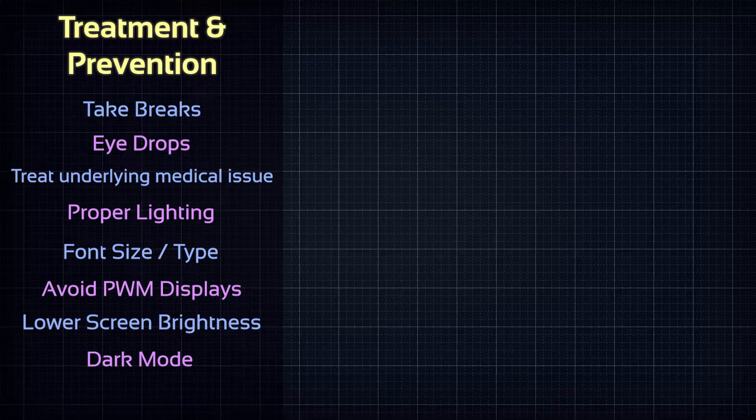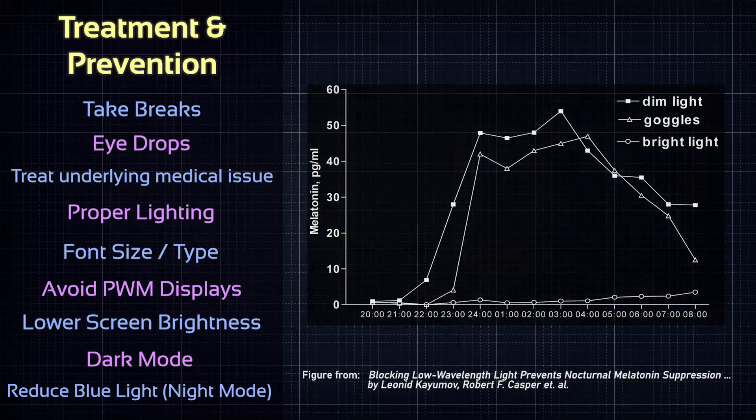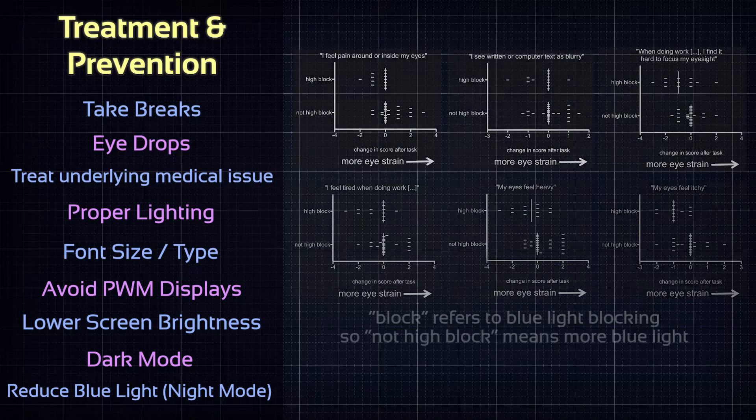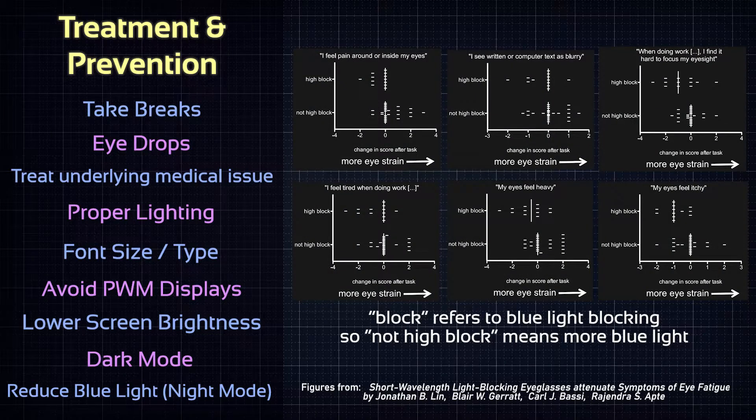Another big factor for digital screens is blue light. It is known that it suppresses your melatonin production, meaning that it messes with your sleep cycle. And it also has been shown that it can be the source of eye strain, more so than other colors.